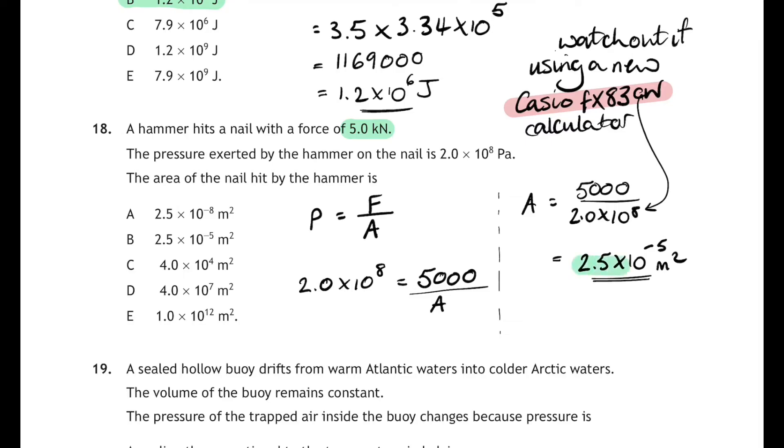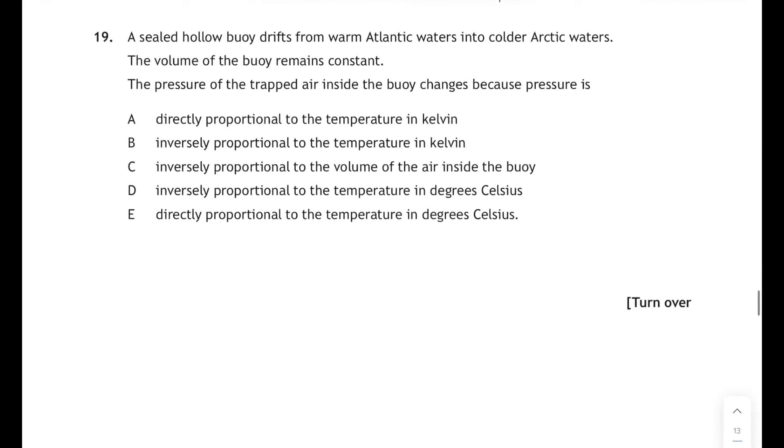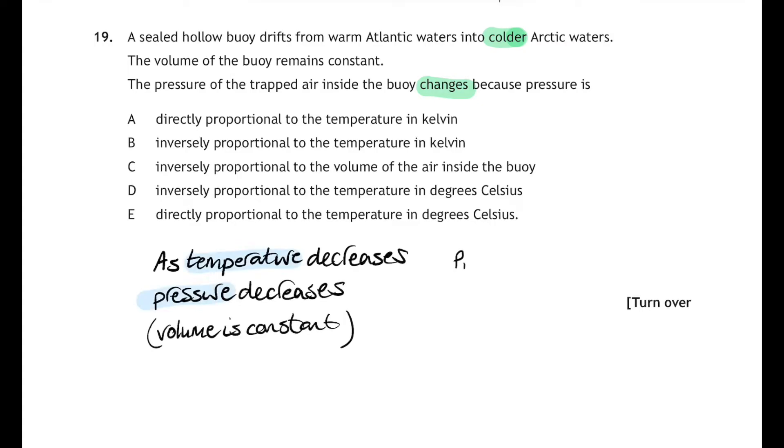Question 19: a sealed hollow buoy drifts from the warm Atlantic waters into cold Arctic waters, and the volume of the buoy remains constant. The pressure of the trapped air inside the buoy changes because the pressure is—well, let's think about the kinetic model here. As temperature decreases, the pressure also decreases if the volume remains constant. You've got this relationship on your relationship sheet, so p divided by t is equal to a constant. So p is directly proportional to the temperature in kelvin, and that is answer A.